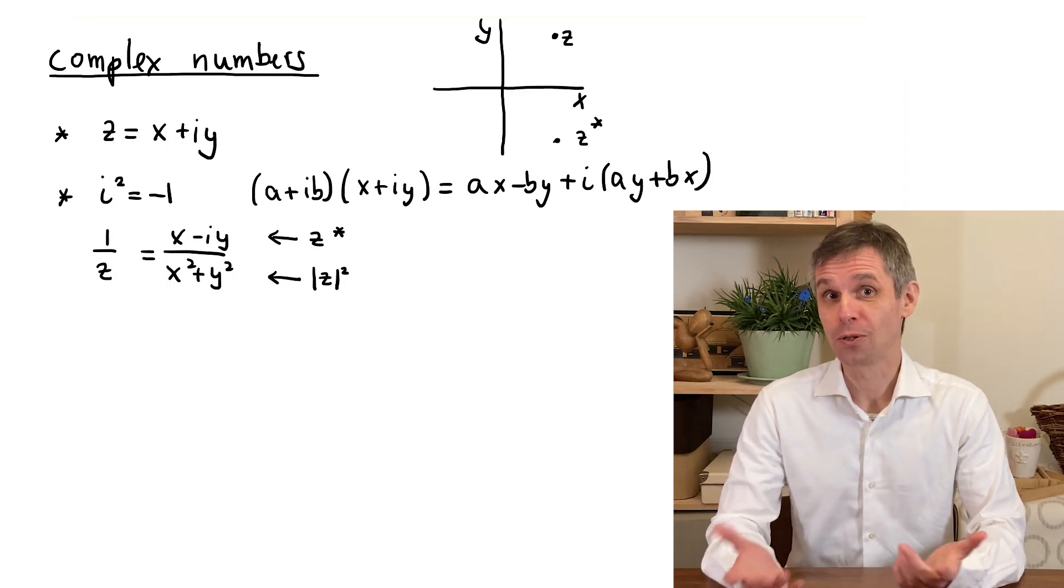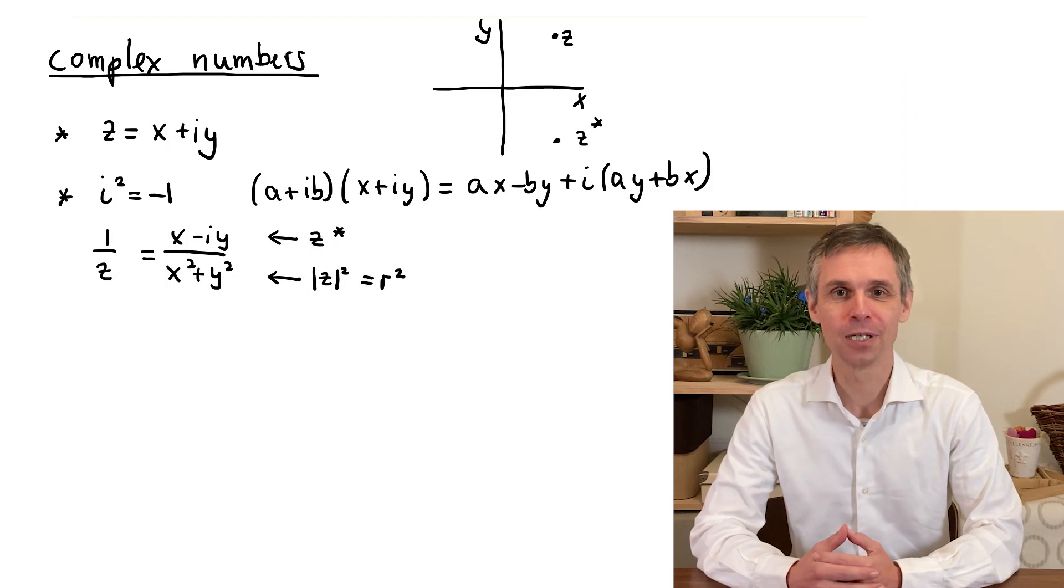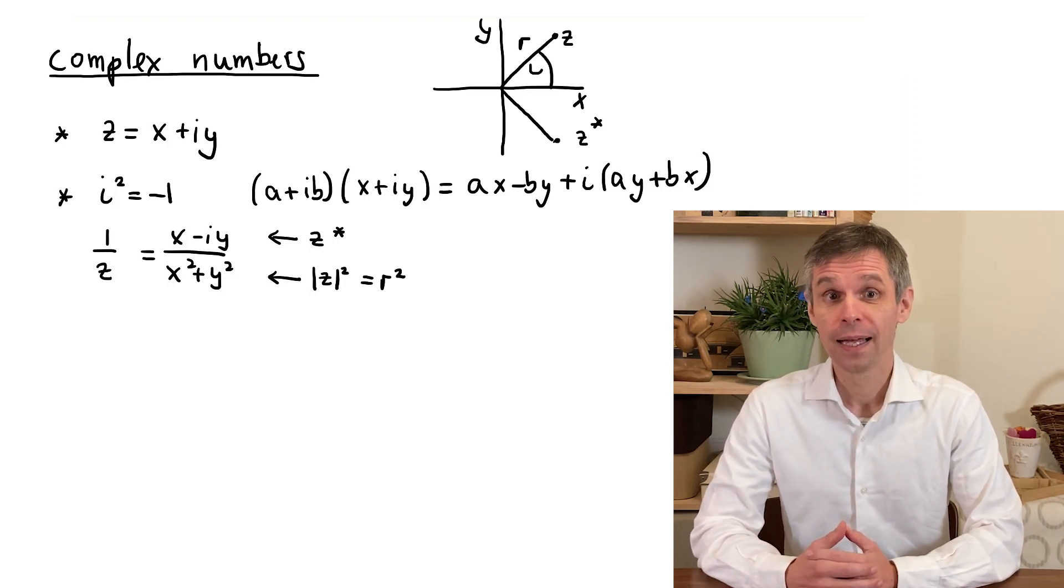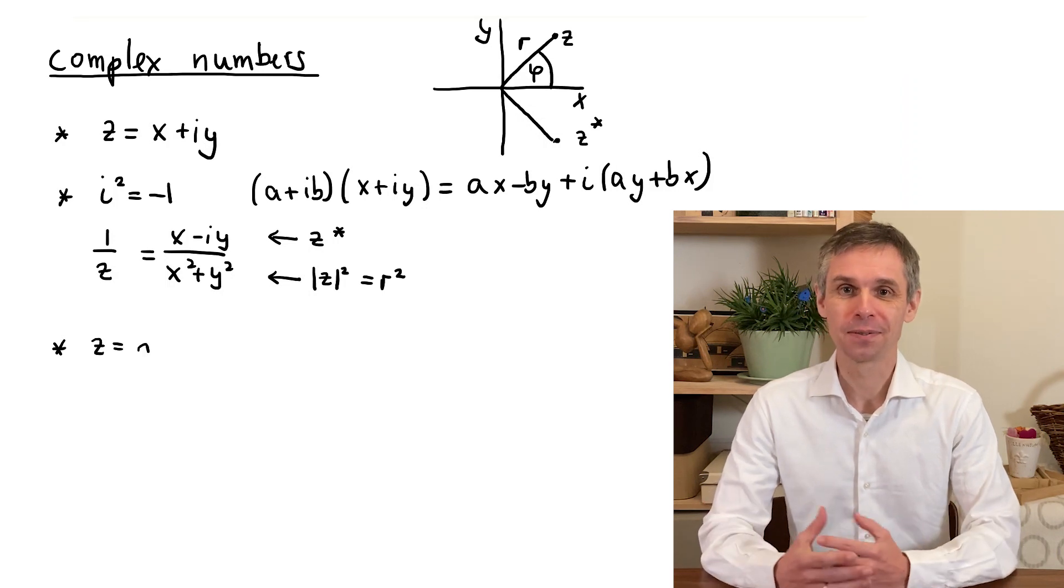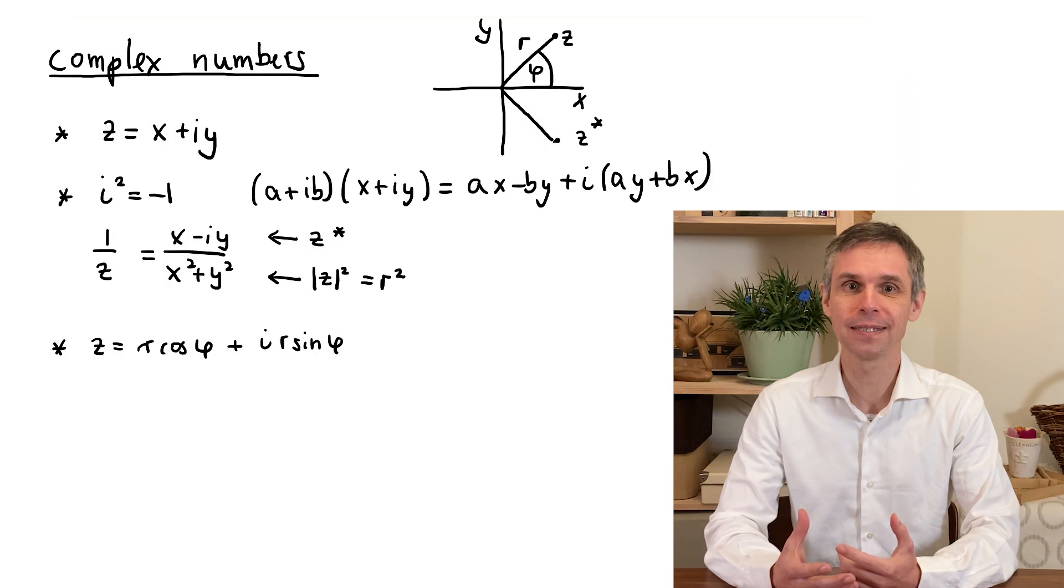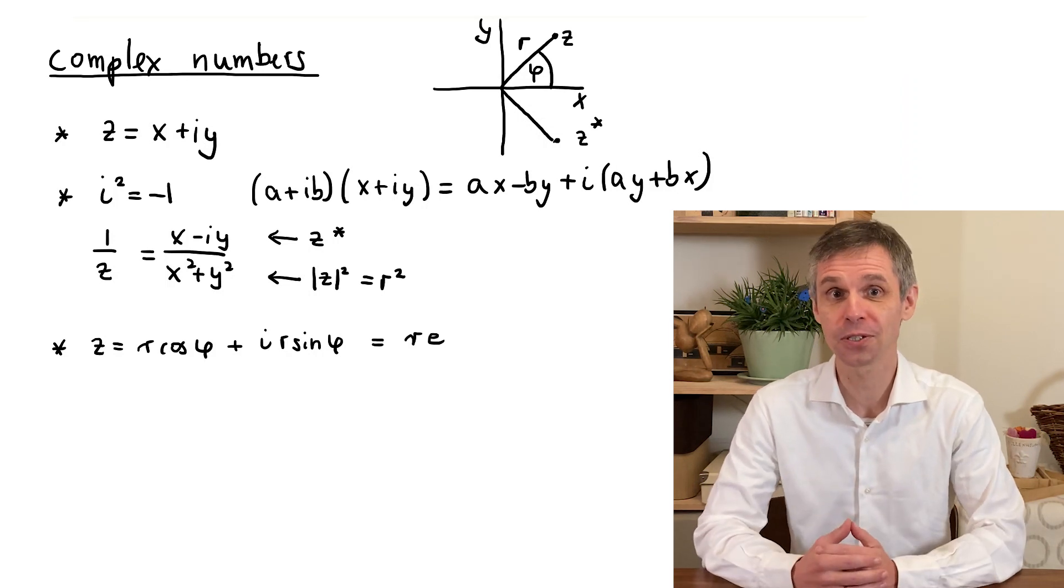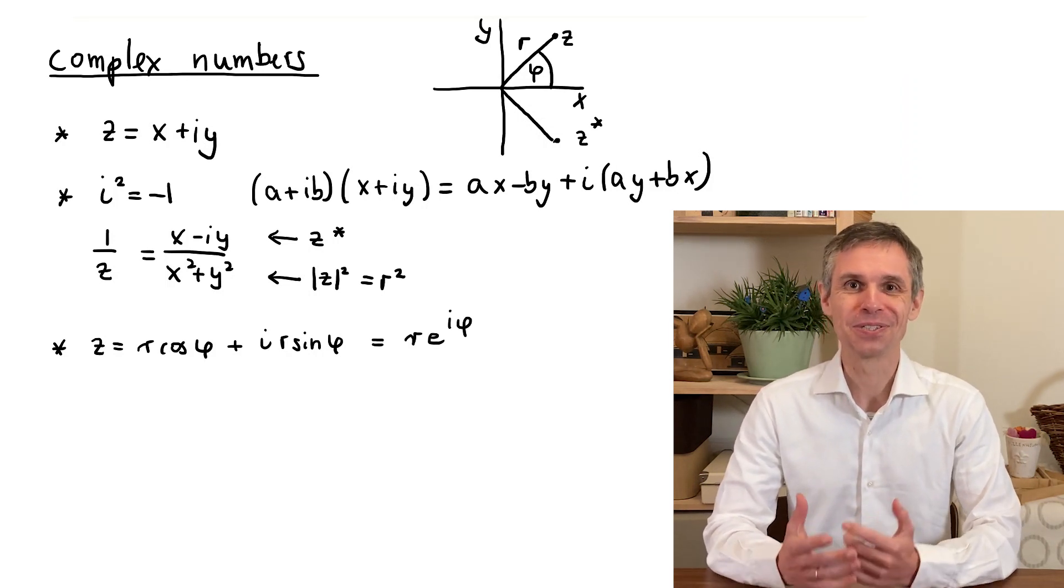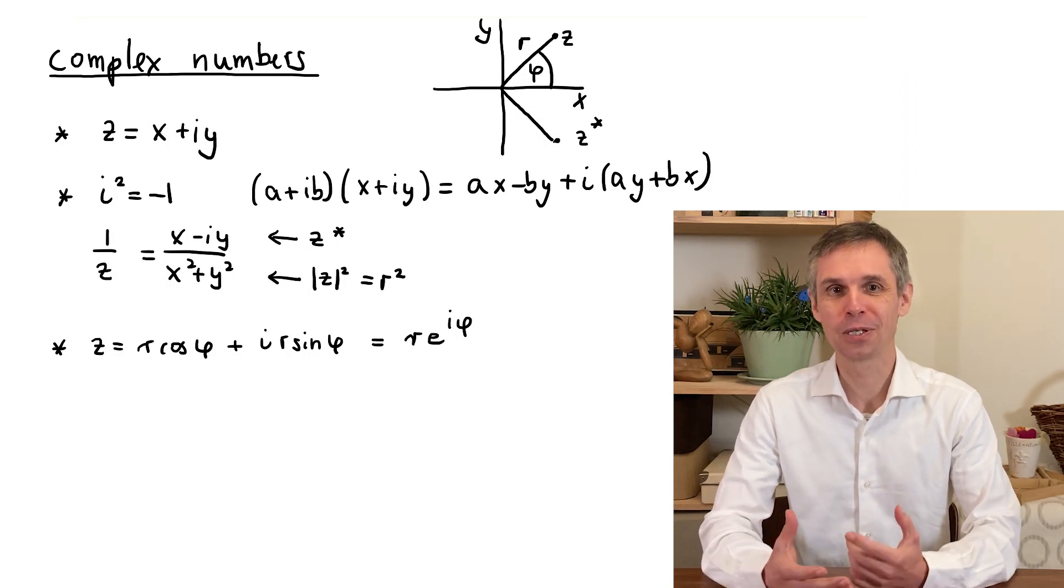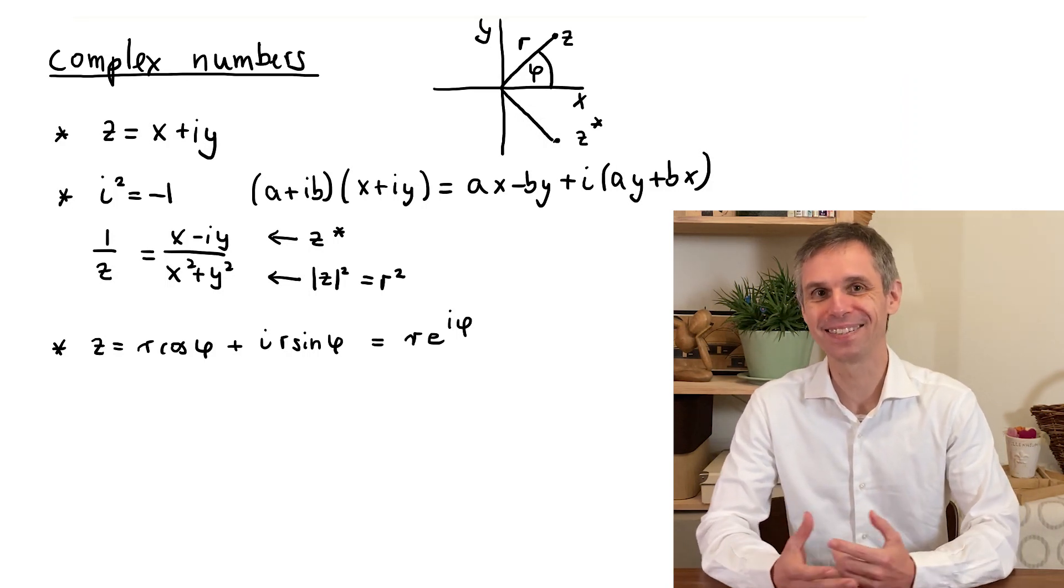Using polar coordinates, we can rewrite a complex number in terms of its absolute value and the angle phi. And as it happens, the combination of the two trigonometric functions that appear here can be rewritten as a complex exponential function. This is the famous Euler identity, which will be extremely useful both for the description of quantum systems as well as in our calculations.